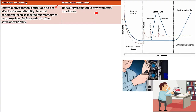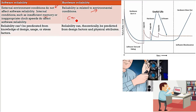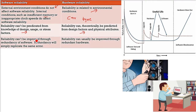Hardware reliability is totally dependent on environmental conditions because wear and tear does happen — for example, if you use a car for a long time, the tire needs to be replaced. Software reliability cannot be easily predicted even if you know the design, usage, or stress factors. Quantitative analysis is not easy for software. But for hardware, we have many models and can easily predict reliability from design factors and physical attributes.